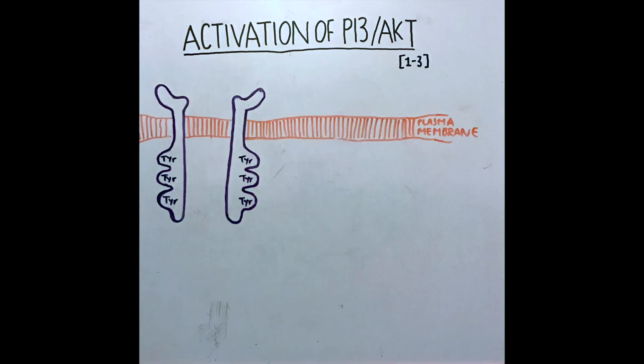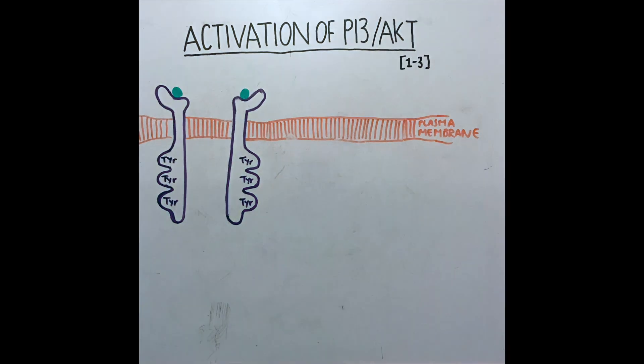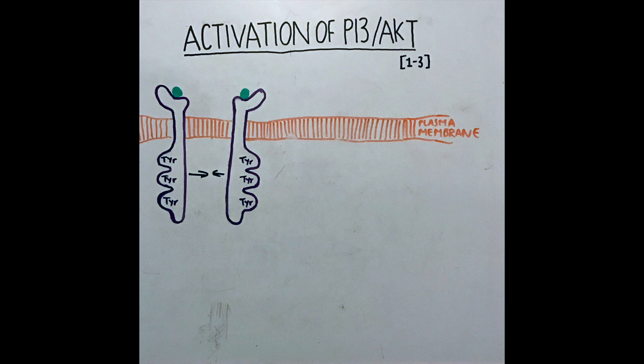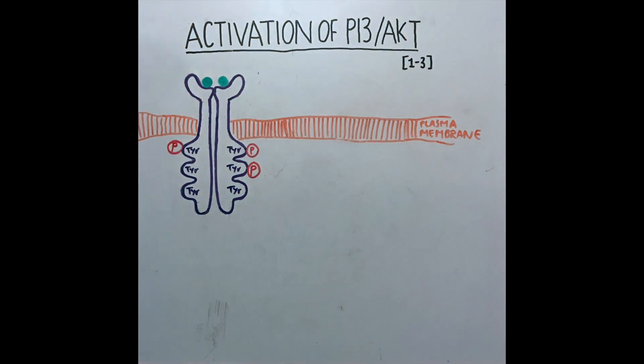The activation of the pathway begins with the binding of an extracellular growth factor such as insulin. This causes the activation of a receptor tyrosine kinase.